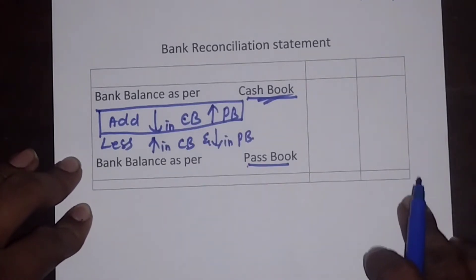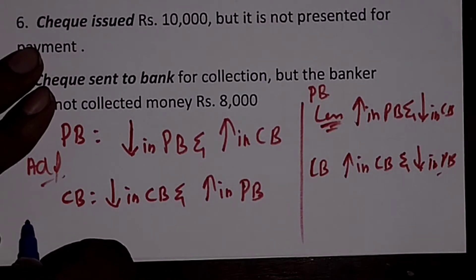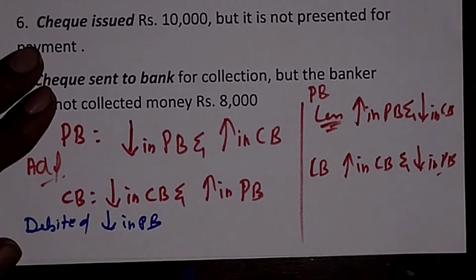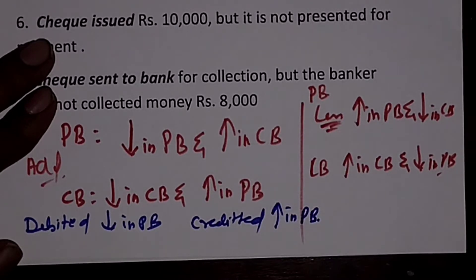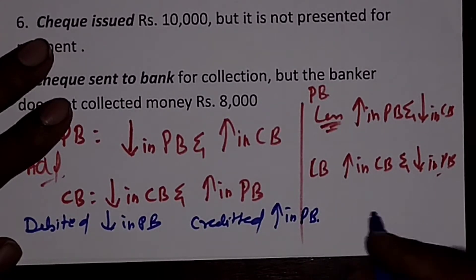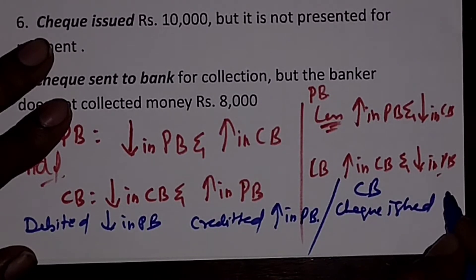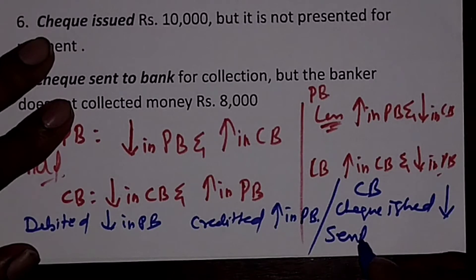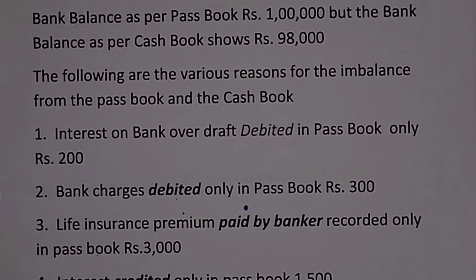With this concept let us enter into solving the problem. A second rule you need to learn: if you find the word 'debited,' it means decrease in pass book. If you find the word 'credited,' that means increase in pass book. In terms of cash book: 'check issued' means decrease in cash book, and 'check sent to bank' means increase in cash book.